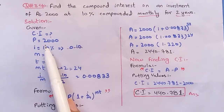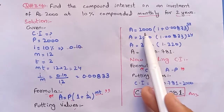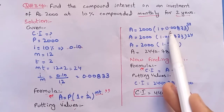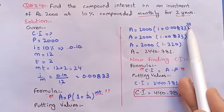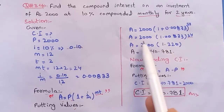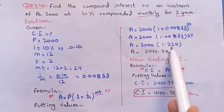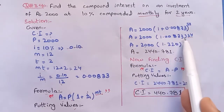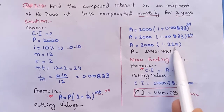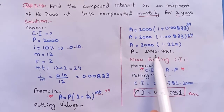To find compound interest, we first find compound amount. Formula: A = P(1 + i/m)^mt. Putting in values: A = 2000 × (1 + 0.00833)^24 = 2000 × (1.00833)^24. Solving the bracket first, then the exponent: 1 + 0.00833 = 1.00833, raised to the power 24 gives approximately 1.220. So compound amount A = 2000 × 1.220 = 2,440.781.